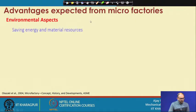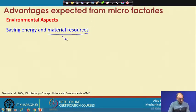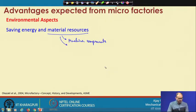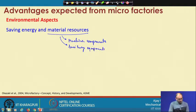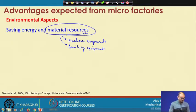The environmental advantages include saving energy and material resources. Material resources relate to machine components and auxiliary equipment, including coolant. With smaller machines, you use very much less of these resources. Cleaning operations take less time because the machine size itself is very small, and you can keep the space very clean both on and around the machines, requiring very little material resources.